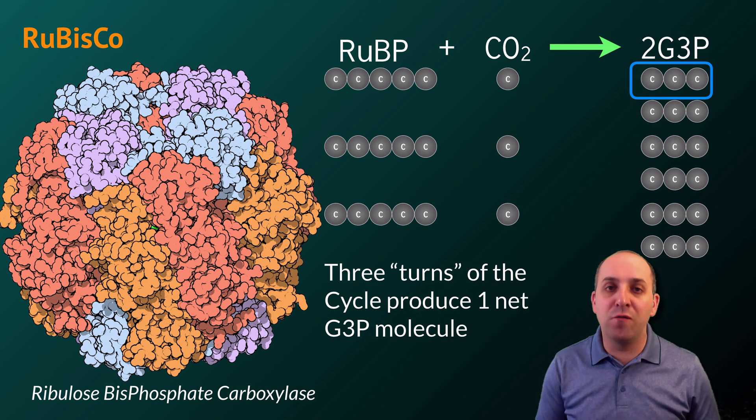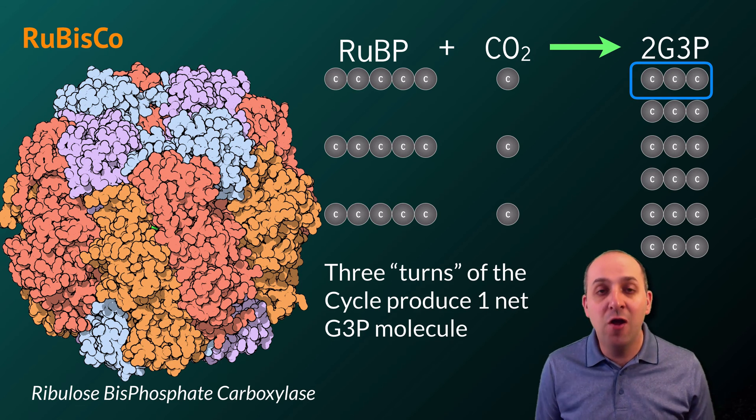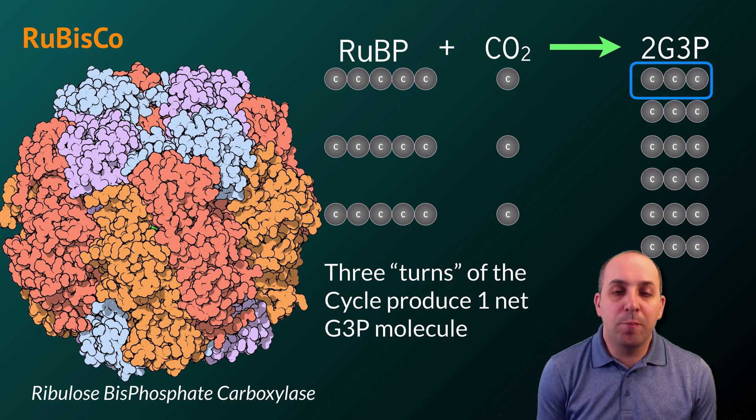RUBISCO is not only crucially important for the Calvin cycle, it's also very inefficient in how it does its job, so plants make a lot of it. By some calculations, RUBISCO is the most plentiful enzyme on the planet.